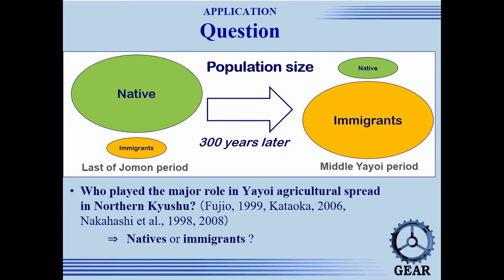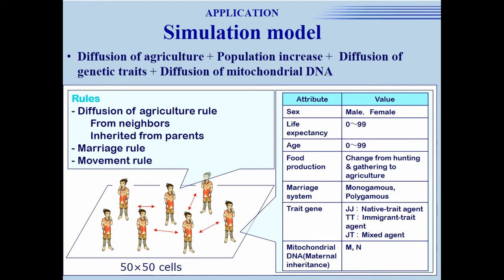However, a large question remains concerning Japanese anthropology and archaeology. At the end of the Jomon period, which was just before the Yayoi period, the population of native people was larger than that of immigrants. However, 300 years later, the situation was reversed. So the most controversial question is: who plays the major role in establishing a farming culture during the Yayoi period — native people or immigrants? In an attempt to answer this question, we use an ABM approach.